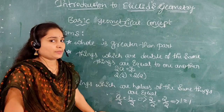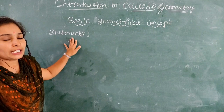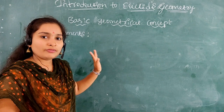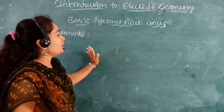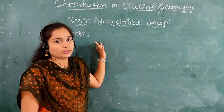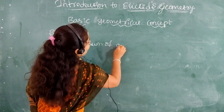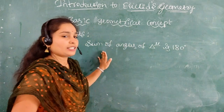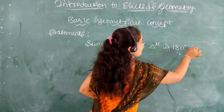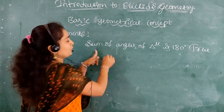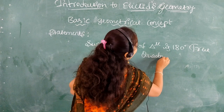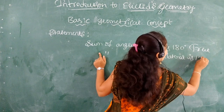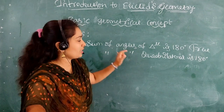Now move on to the next concept: Statement. A statement is a sentence which is either true or false — not both. For example, the sum of angles of a triangle is 180 degrees — this statement is true. Another example: the sum of angles of a quadrilateral is 180 degrees — this statement is false.